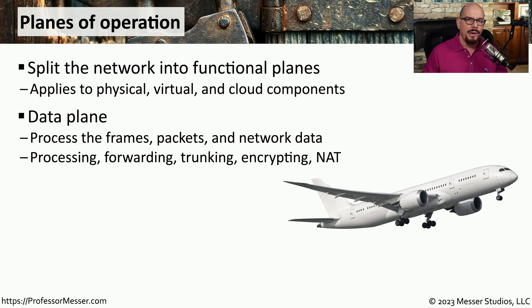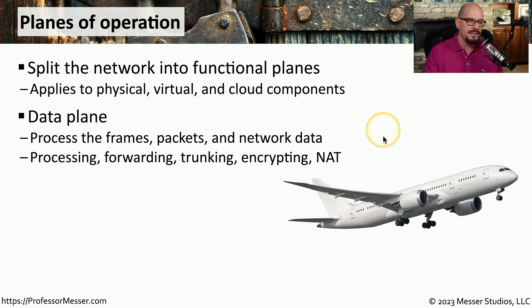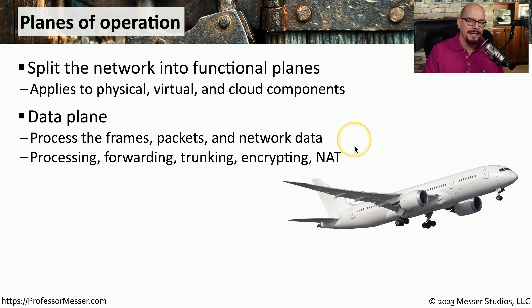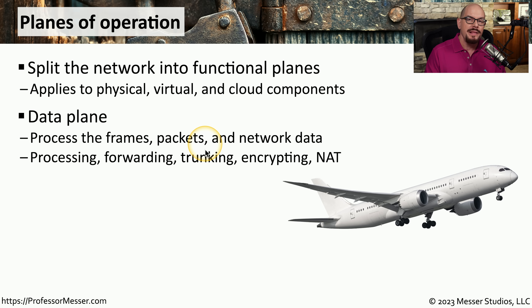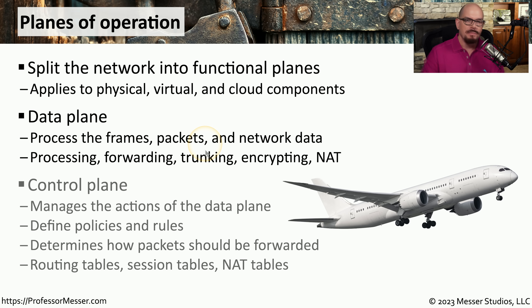Broadly speaking, we can look at these as having two different planes of operation. One of them is the data plane. The data plane is the part of the device that is performing the actual security process — a switch, router, or firewall that's processing frames, packets, and network data in real time. The data plane on these devices handles forwarding, network address translation, routing, or anything else that moves data from one part of the network to another.